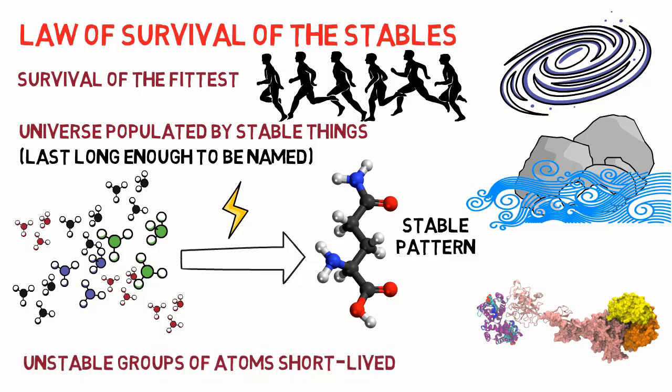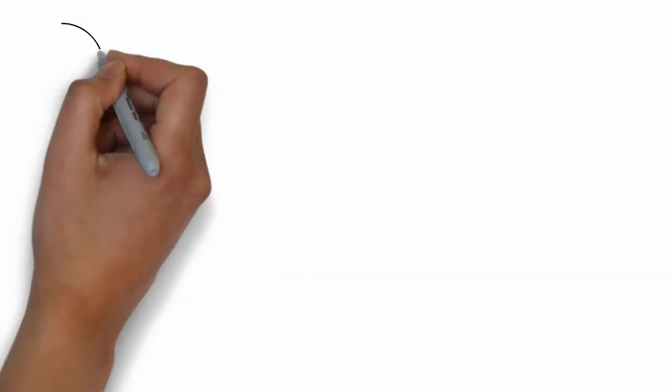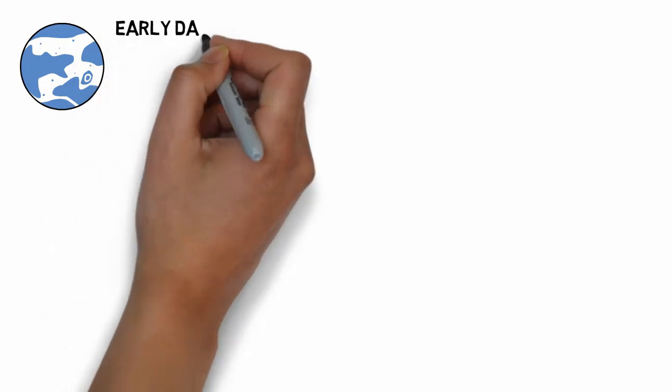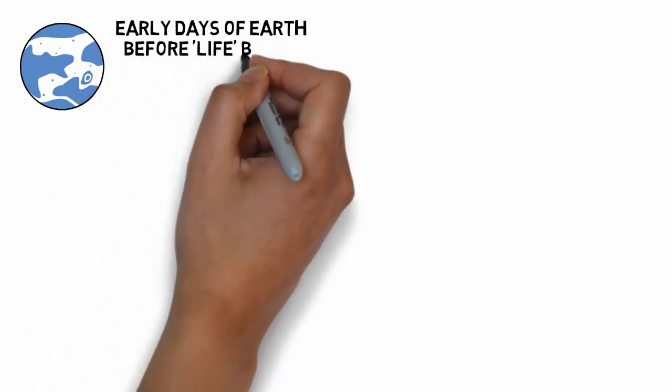Unstable groups of atoms tend to be short-lived and therefore rejected through natural selection. However, this random process and slow building of molecules is not enough to explain the existence of humans. We can start by looking at the chemical conditions during the early days of Earth, before life began.